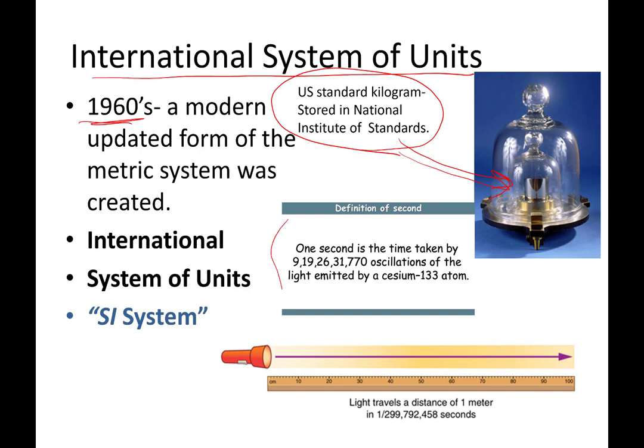One second, which is the metric unit of time, is defined now as how many oscillations of a cesium-133 atom. The distance one meter, instead of being based on distance measured on the Earth, is how far light travels in so much time. Again, still the same length, but much more precisely measured. Now, this modernized metric system is often abbreviated as the SI system. And one of the questions students ask very often is, if it's the International System of Units, why is it referred to as the SI system instead of the IS system?